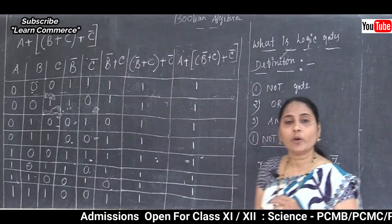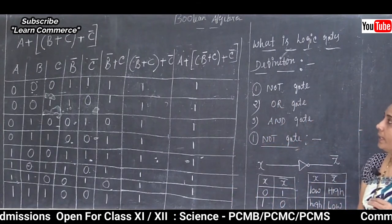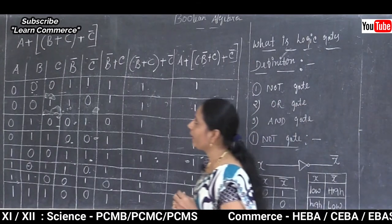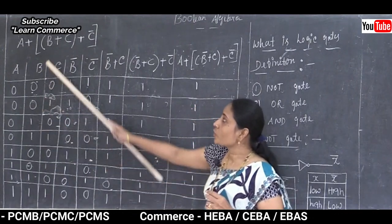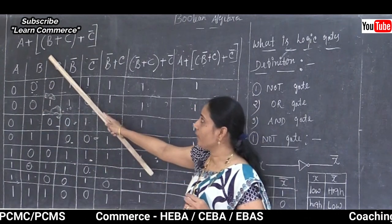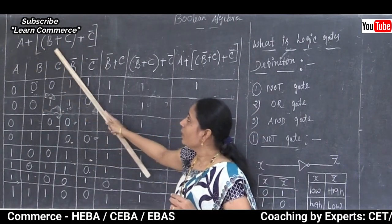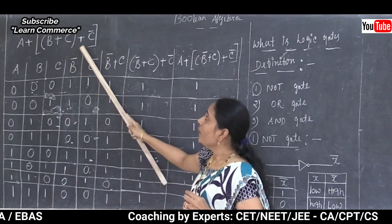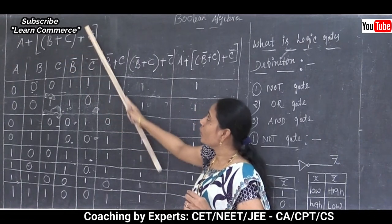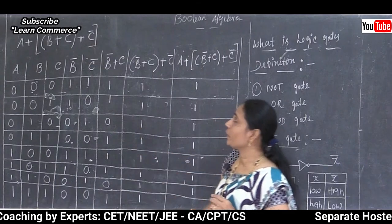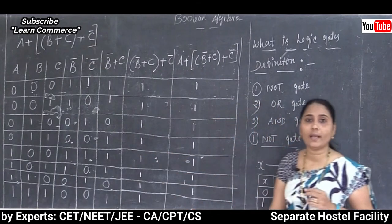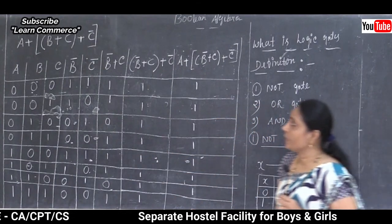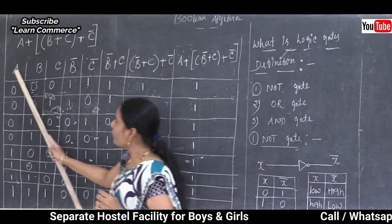Now let's look at the next example for our Boolean expression. Solve the expression A plus (complement B plus C) plus complement C by using the truth table.